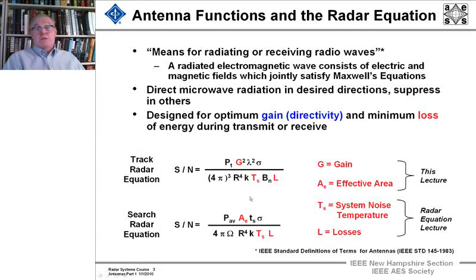It's a means, as I said, of radiating the radio microwaves and receiving them. You could have a bi-static radar that has one antenna for transmitting and one for receiving, but most of the time the same antenna is used for transmission and receiving. And it's a radiated electromagnetic wave that consists of electromagnetic fields which jointly satisfy Maxwell's equations. One thing we want to do is direct that microwave energy in the desired direction. We want to maximize that and suppress all other directions, energy going to other directions.